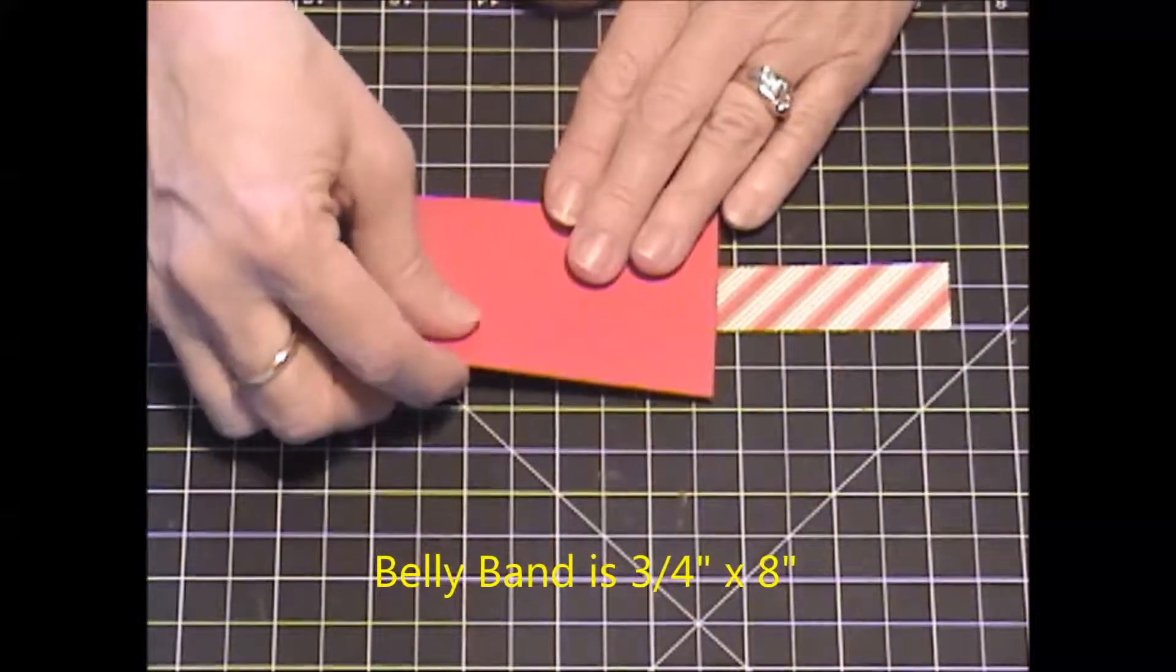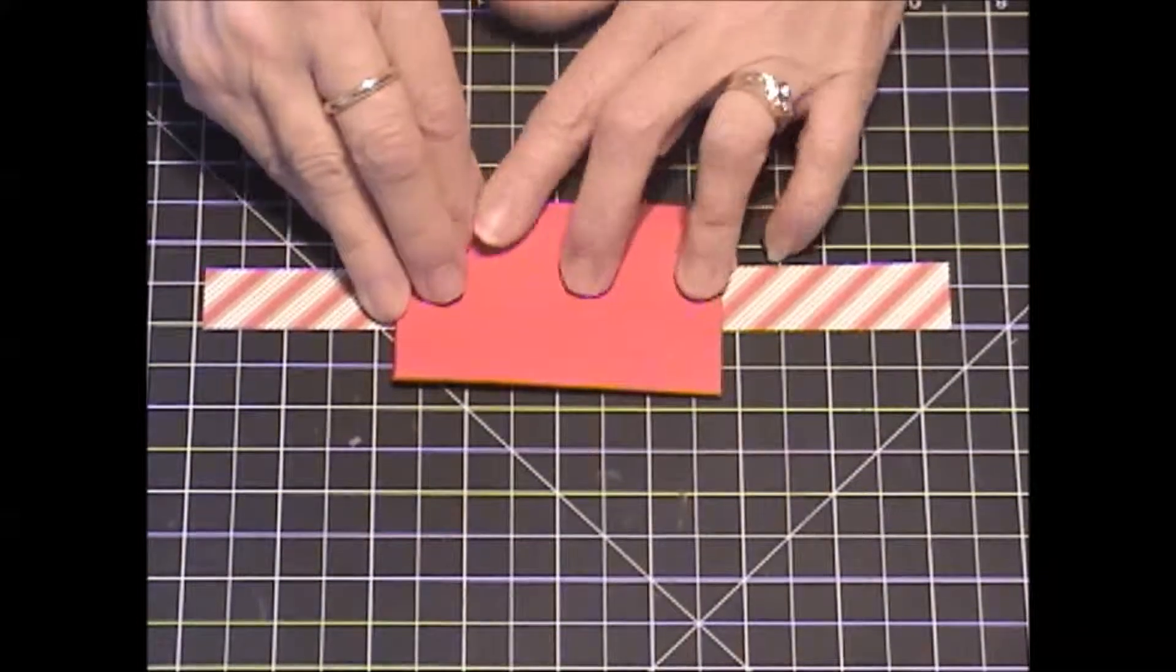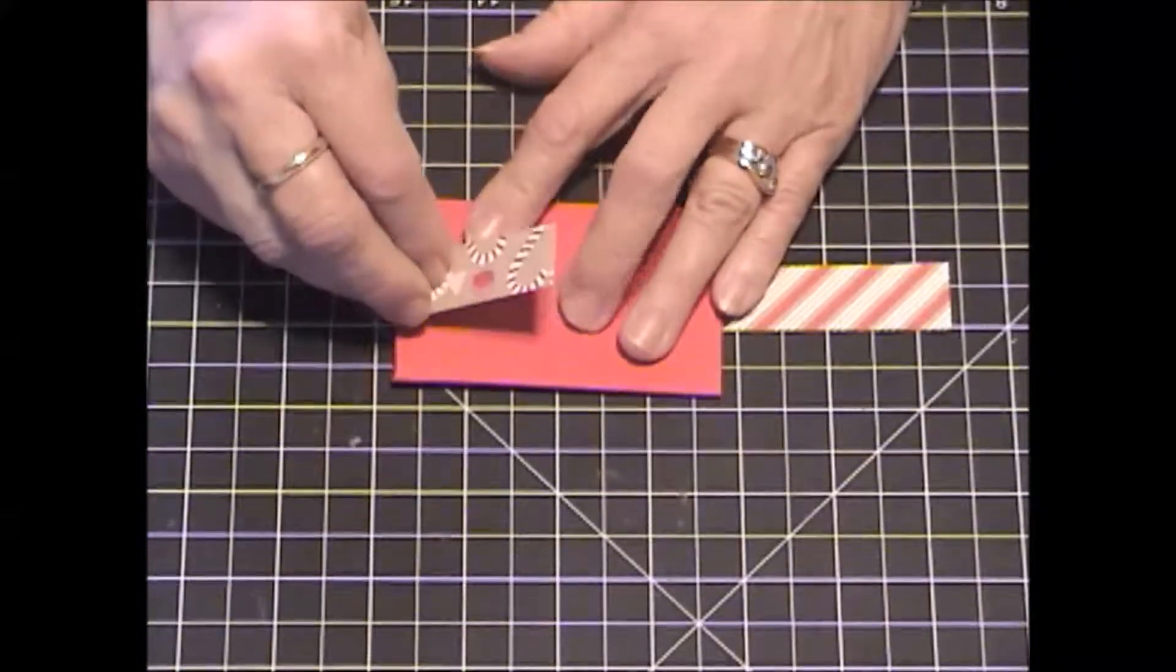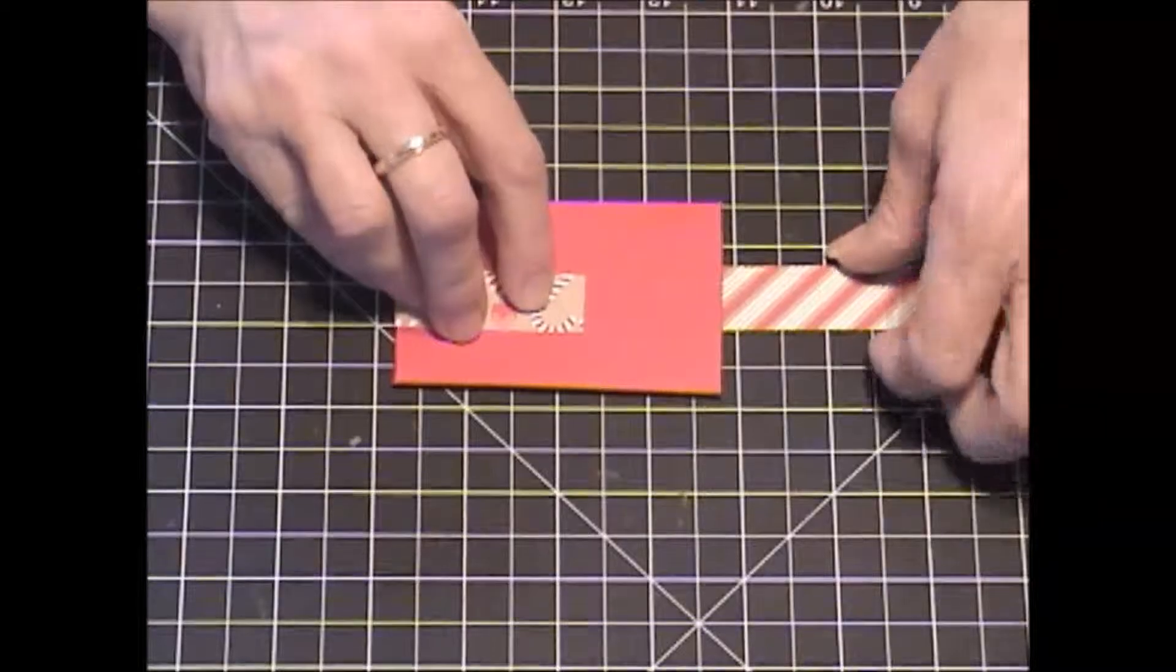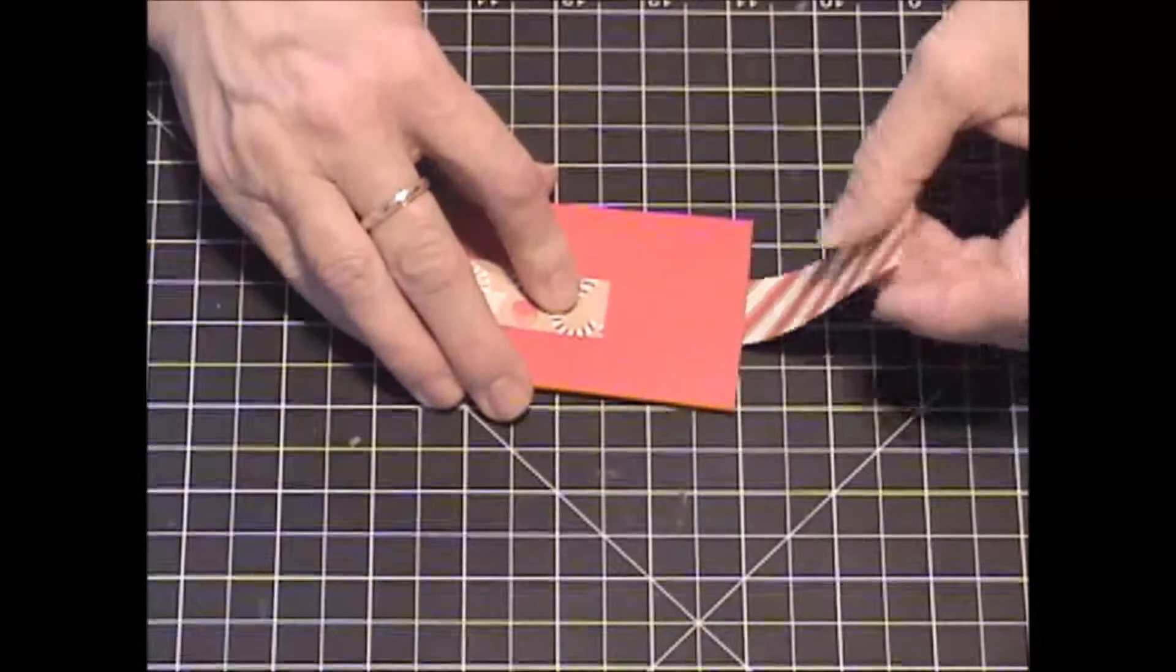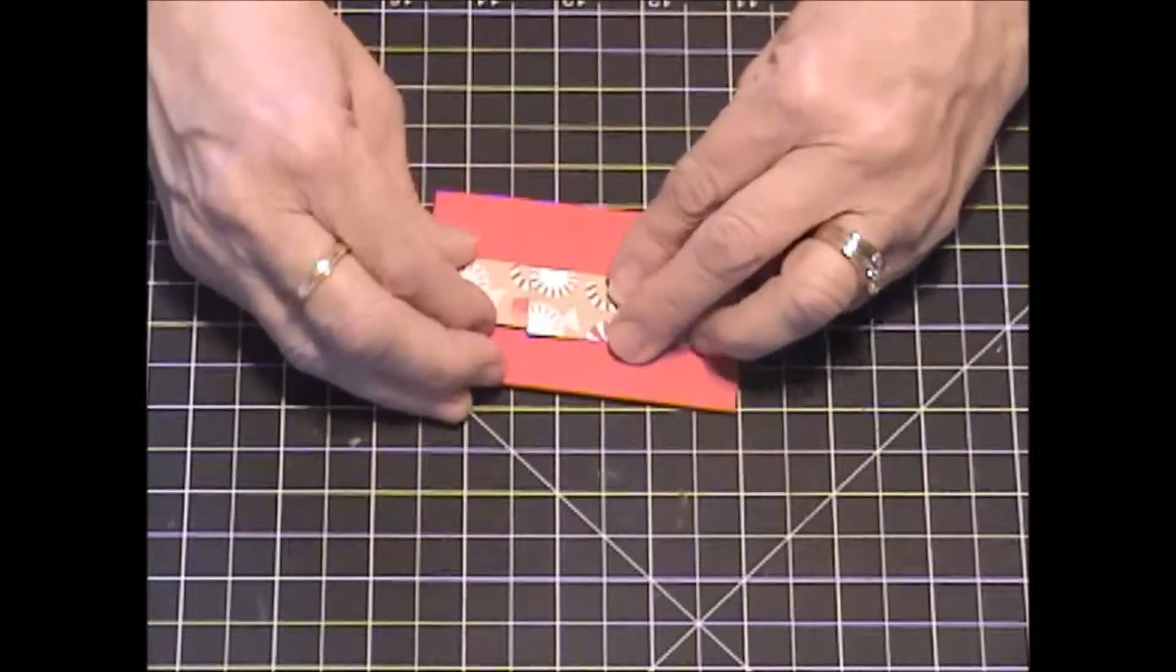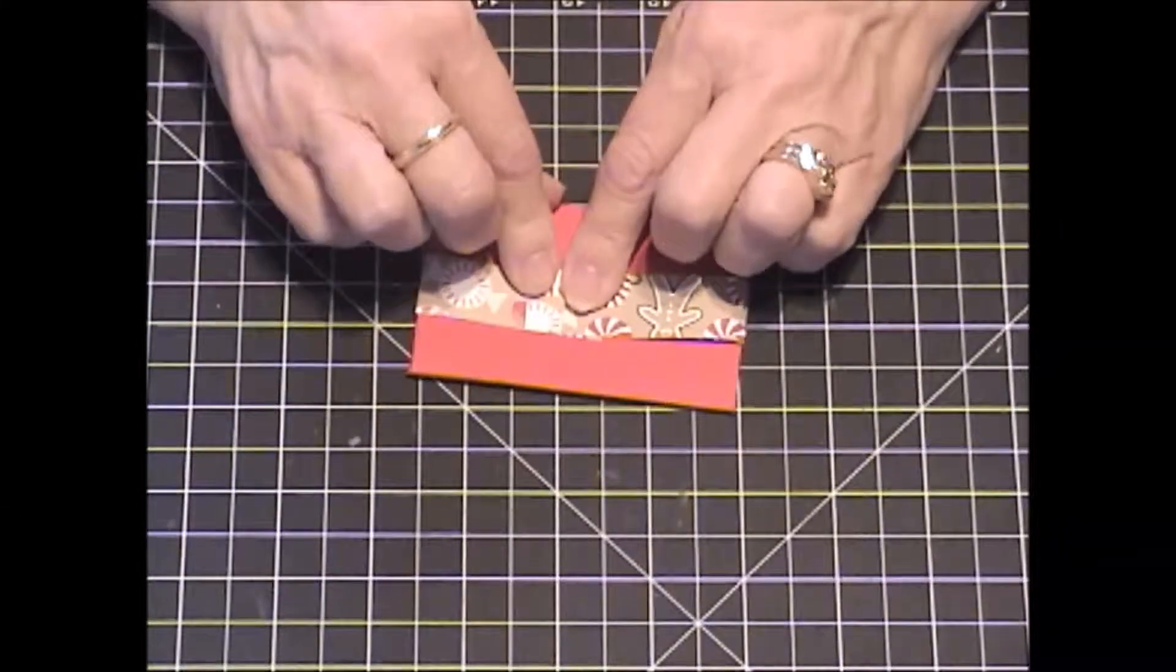This is a great way to use up your extra strips of DSP. Now we're going to wrap it around because we want the seam in the front, and that way our embellishment will cover the seam. And don't wrap this too tightly because you want to be able to get it off of your envelope and you want to be able to get your gift card in there.